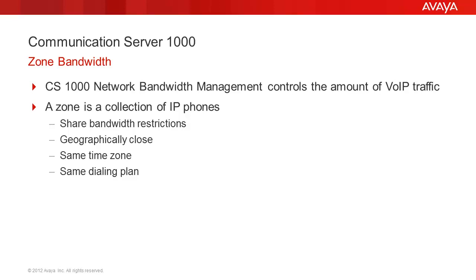Treatment may consist of blocking new calls or rerouting them if the required bandwidth is not available. A zone is a collection of IP phones that share similar IP bandwidth restrictions, are geographically close to one another, are in the same time zone, and are in the same public switch telephone network dialing plan. Displaying the zone bandwidth usage allows you to monitor the voice over IP traffic to troubleshoot various issues related to insufficient network bandwidth.